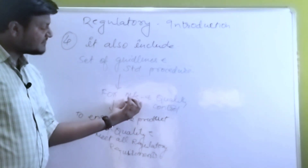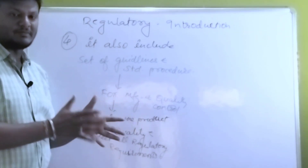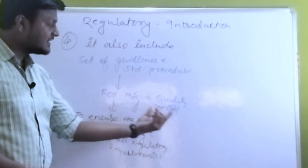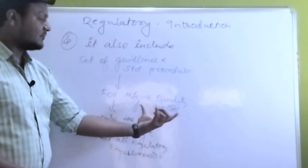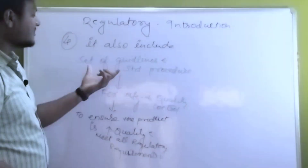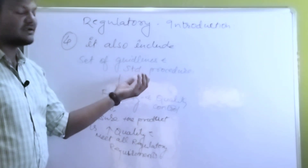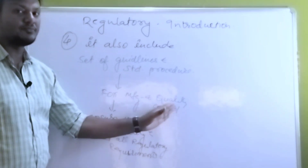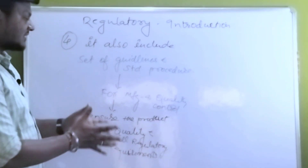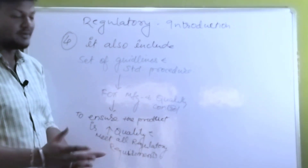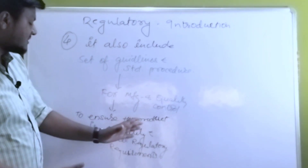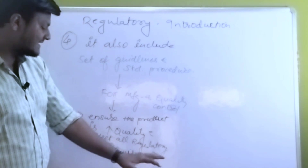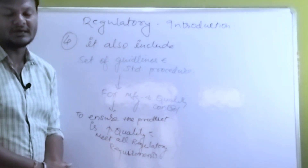It also includes a set of guidelines and standard procedures intended for use by all manufacturing and quality control professionals. It binds them to function and work in a way that ensures the product is of maximum quality and meets all the regulatory requirements. If you have these procedures, sets of guidelines, and standard procedures followed, then whatever testing and analysis the quality control department performs will obviously meet and fulfill the regulatory requirements.